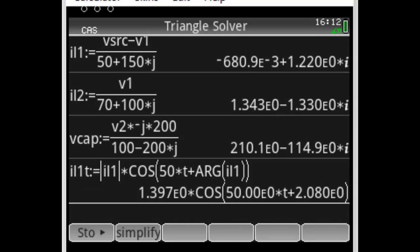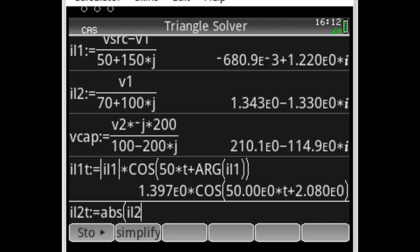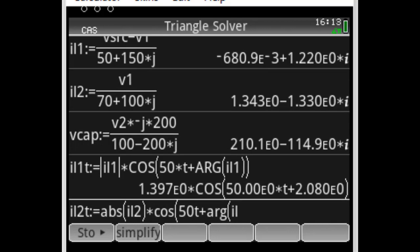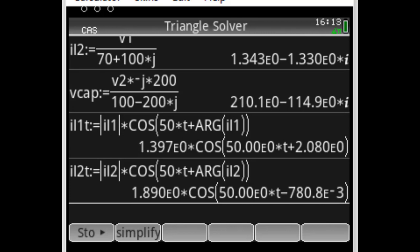Let me write the current in inductor 2 as a function of time: the peak value, absolute value of the phasor IL2, multiplied by cosine, cosine(50t) plus the argument of IL2. There in radians.